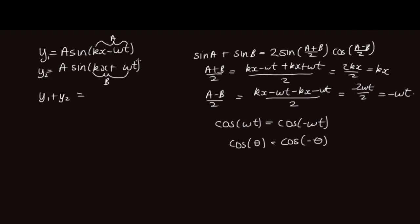Okay, so now that we've worked out what a plus b over two and a minus b over two are, we can use this equation. So we've got two a, so a is a common factor out the front, and then we've got the sine of a plus b, so that's sine kx, times cos of omega t.